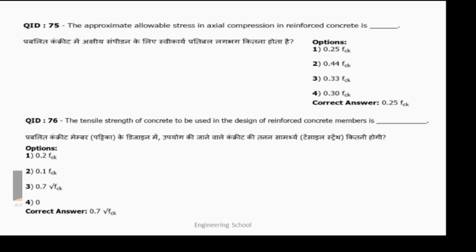The tensile strength of concrete to be used in design of reinforced concrete members is 0.7 times the square root of fck. The tensile strength is 0.7 × √fck.